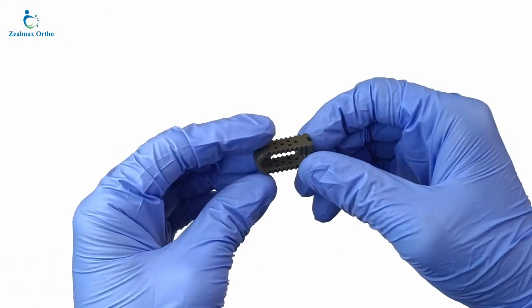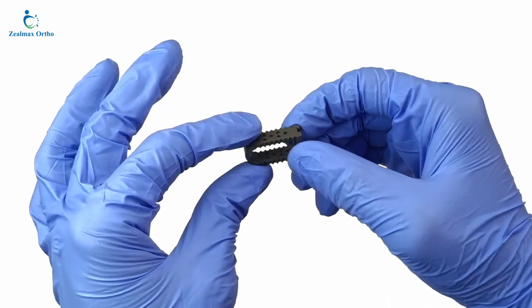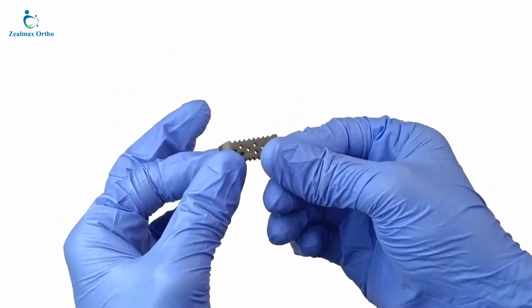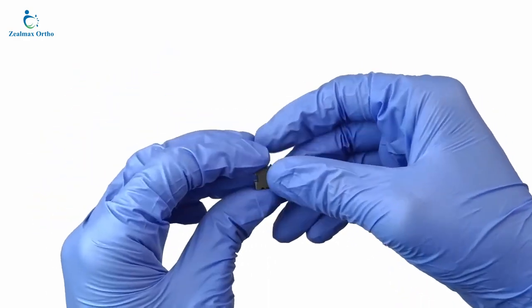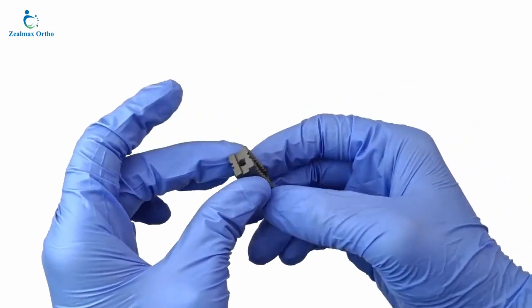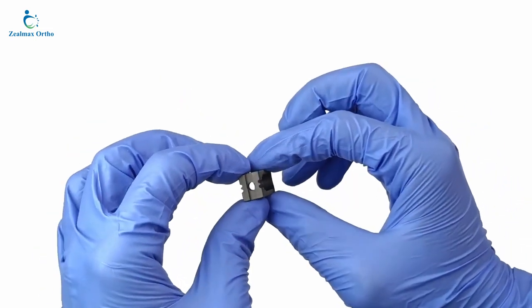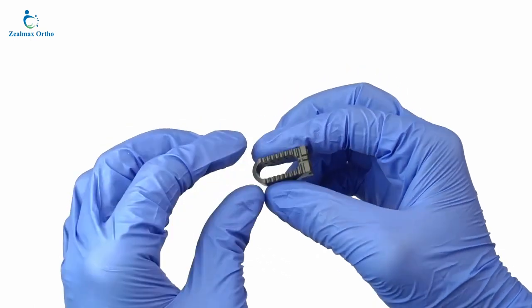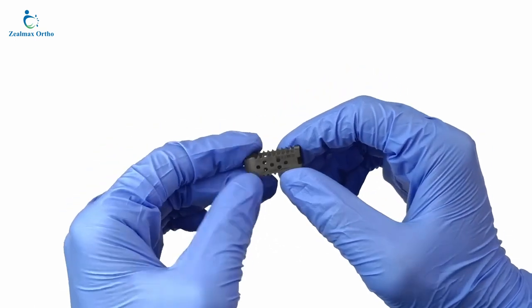The posterior lumbar interbody fusion bullet type cage is specially designed for PLIF procedures. This cage has a bullet-shaped or tapered structure that allows for easier insertion into the intervertebral space. PLIF bullet type cages offer good load-bearing capabilities and support for fusion.